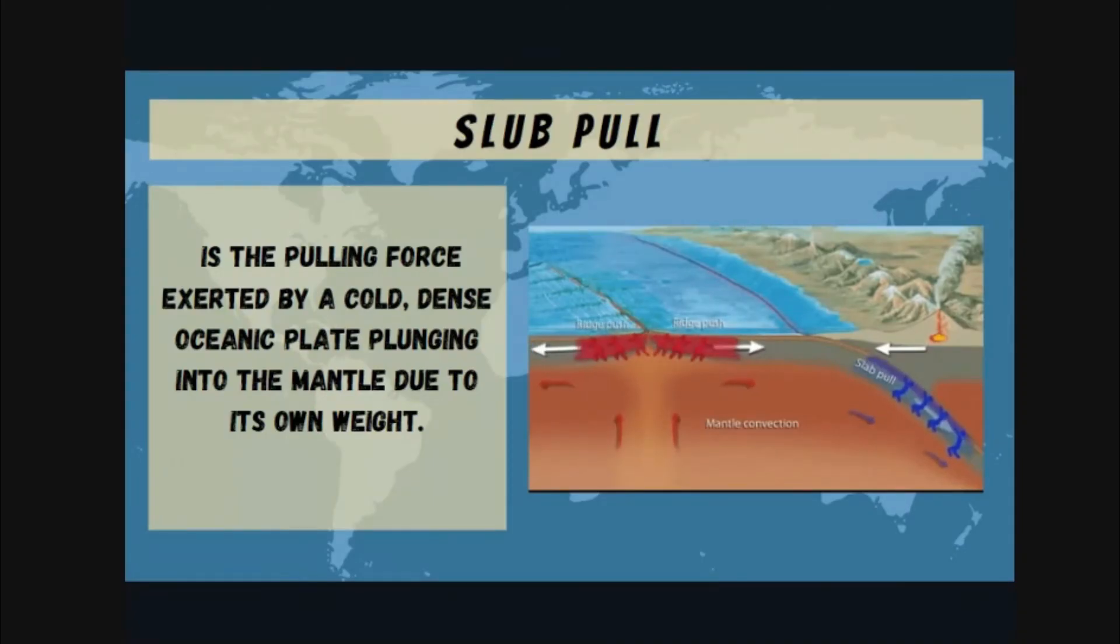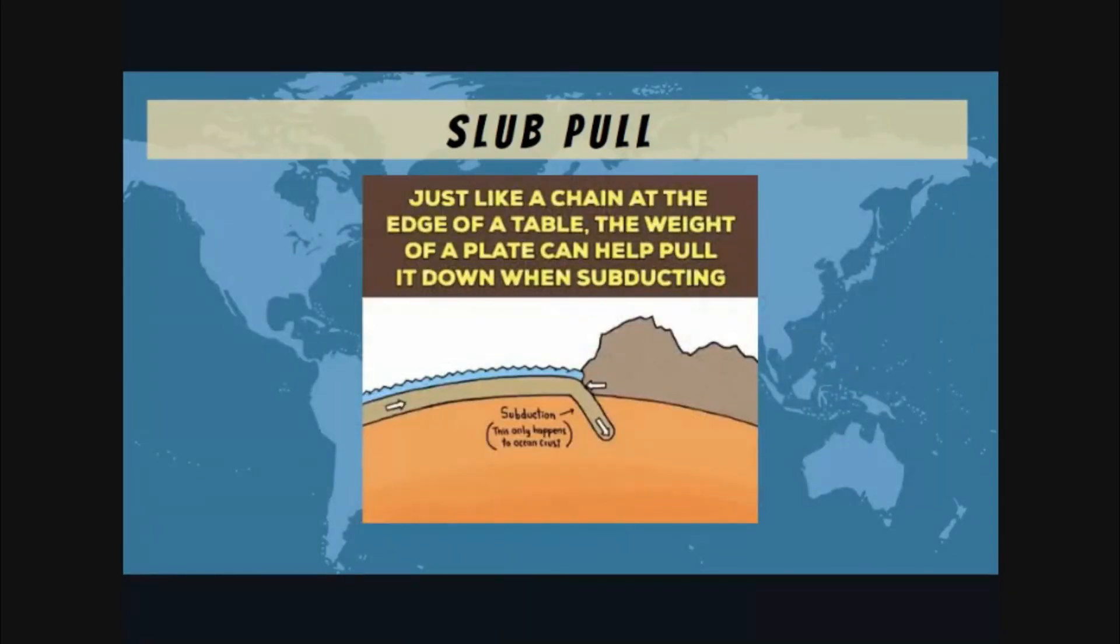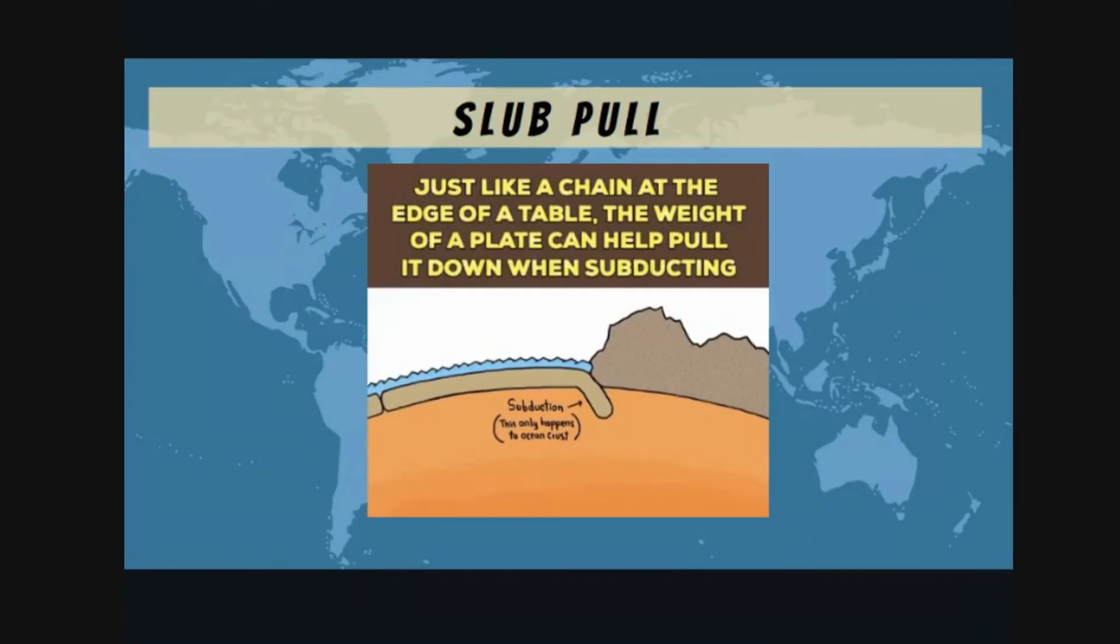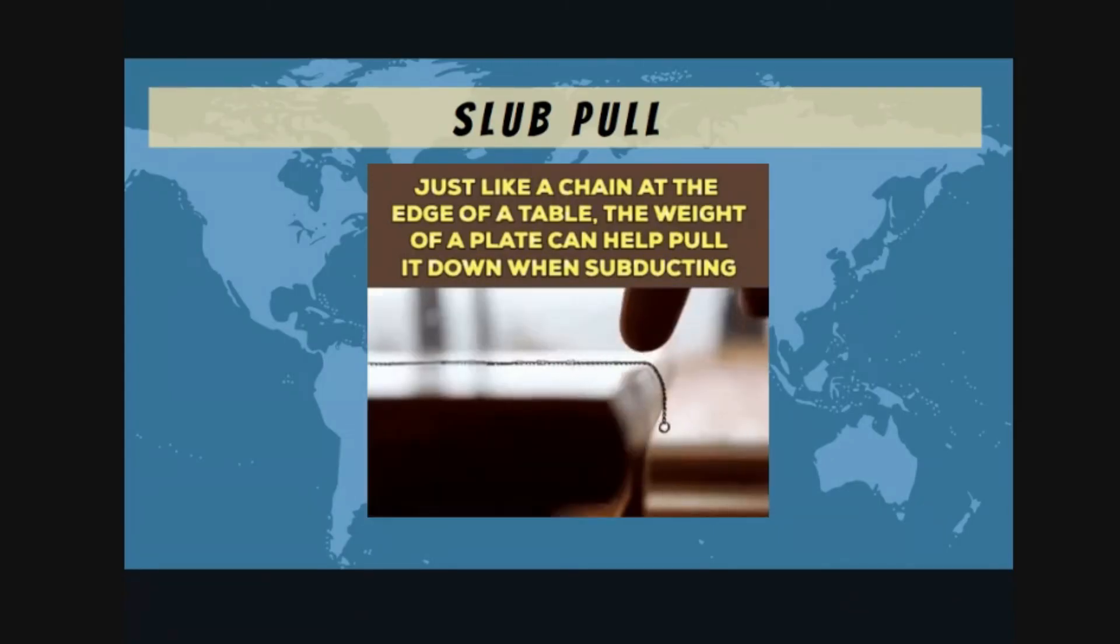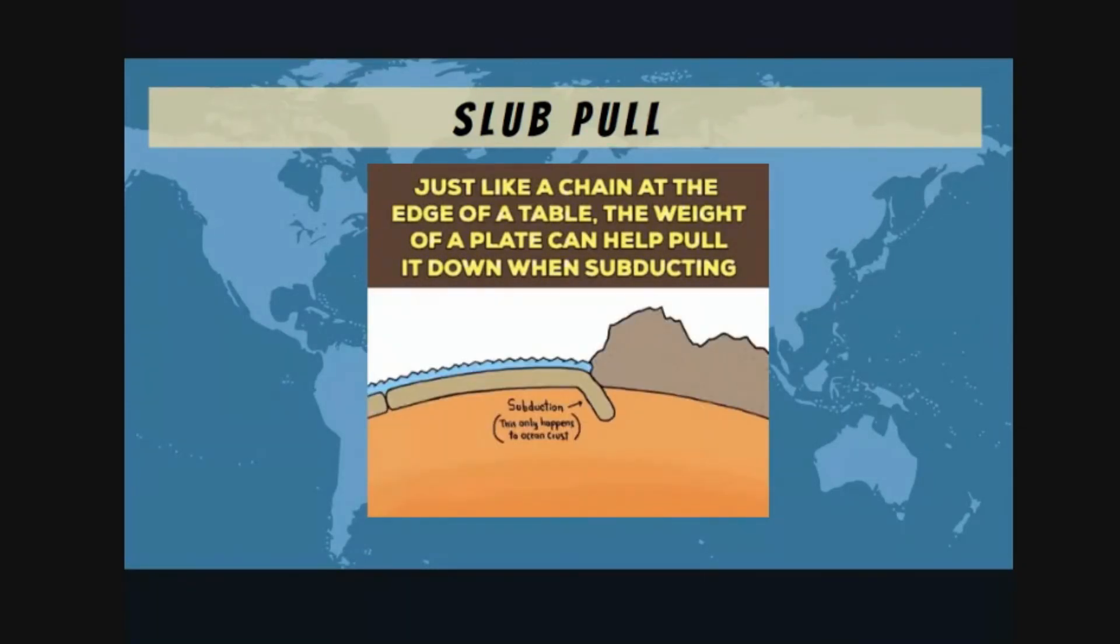We were here earlier at the ridge. Ridge push will push the older crust until it reaches the subduction zone. When we say subduction zone, that's the place where the older plates will subduct and pull themselves down. Because they are heavy, they will pull themselves downward continuously, like a chain. Once it starts falling, it continues directly because of the weight and also because of gravity. It will pull continuously downward, and because it's heavy, the tendency is to move downward.